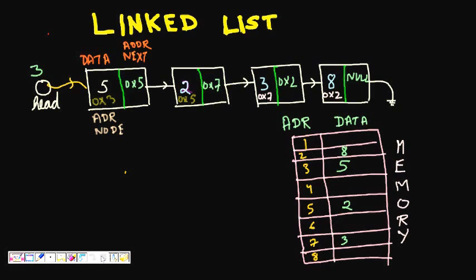In this class we will learn about linked lists, and in particular about inserting a node at the beginning of a linked list. Here we can see a linked list with four nodes, and we want to see how to add a node to it. First, we will consider the memory of the computer as a kind of table where each memory cell has an address and stores some data.